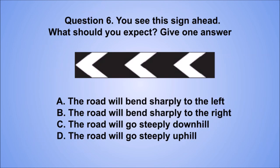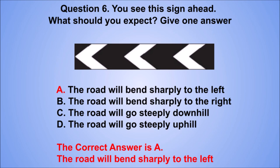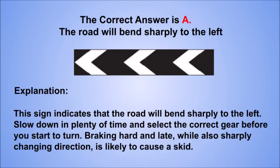Question 6. You see the sign ahead. What should you expect? Give one answer. A. The road will bend sharply to the left. B. The road will bend sharply to the right. C. The road will go steeply downhill. D. The road will go steeply uphill. The correct answer is A, the road will bend sharply to the left. This sign indicates that the road will bend sharply to the left. Slow down in plenty of time and select the correct gear before you start to turn. Braking hard and late, while also sharply changing direction, is likely to cause a skid.